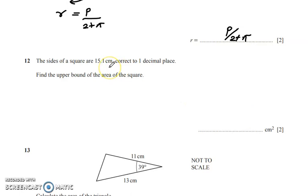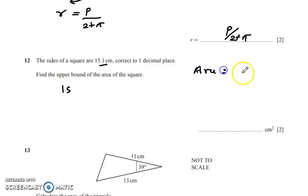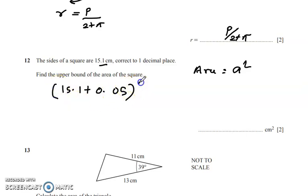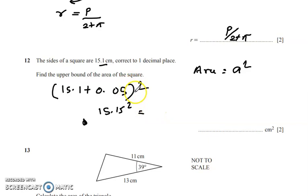Question 12: the side of a square is 15.1, correct to one decimal place. Find the upper bound of the area. We add 0.05 to get the upper bound: 15.15. The area of a square is side squared, so 15.15² = 229.5225. That is our final answer.